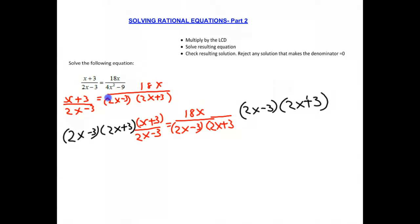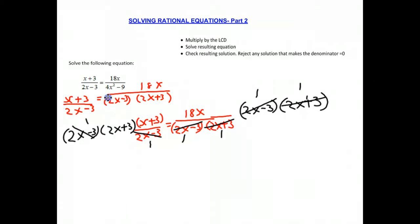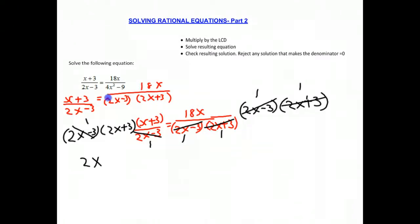Now it might be clear that some things could be canceled. Notice that the 2x minus 3 and the 2x minus 3 in the denominator here could be canceled. And on the right side, 2x minus 3 and 2x minus 3 could be canceled, and 2x plus 3 and 2x plus 3 can be canceled. That would eliminate all of our denominators. If we continue on the left side, we finally get 2x plus 3 times x plus 3. On the right side, all we have is 18x.